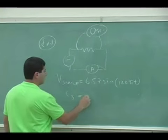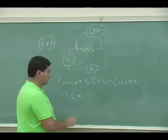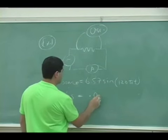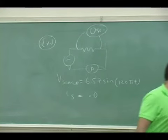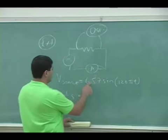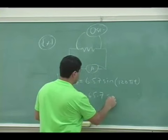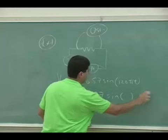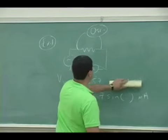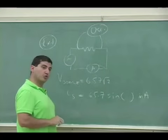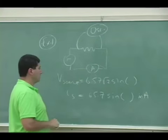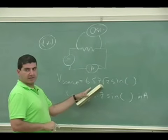So what should the current be? The current of the source will be this divided by a hundred. Let me write it as a milliamp, so it'll be 65.7 sine of this times milliamps. Oh sorry, I forgot to put the V source. It should be 6.57 root 2 sine of this, because the maximum is the effective voltage times root 2.